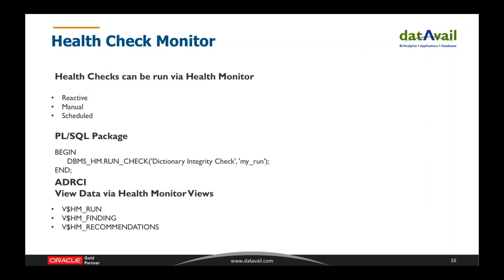The next health check method is Health Monitor, which is included in version 11 onward. Health Monitor is more of a reactive way to troubleshoot problems or investigate issues that show up on one of your proactive health checks. The methods for running Health Monitor are reactive — meaning it runs automatically in response to an error — or manually, where you run it yourself to research a problem. Health Monitor can be run in DB online mode, where all health checks can be run, or in DB offline mode where the database is in a no-mount state. In offline mode, only the redo integrity check and the DB structure integrity check can be run.